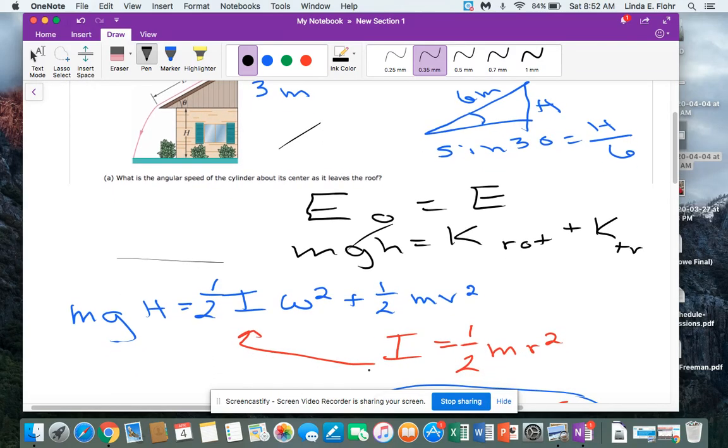So this is a disk, a cylinder is a disk, and so I know that rotational inertia is one half mr squared.